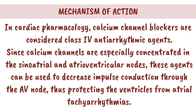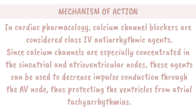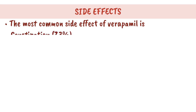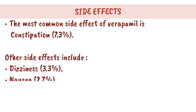Verapamil is also a KV voltage-gated potassium channel blocker. Indications: Verapamil is used to treat hypertension, supraventricular tachycardia, angina pectoris, and arrhythmias.